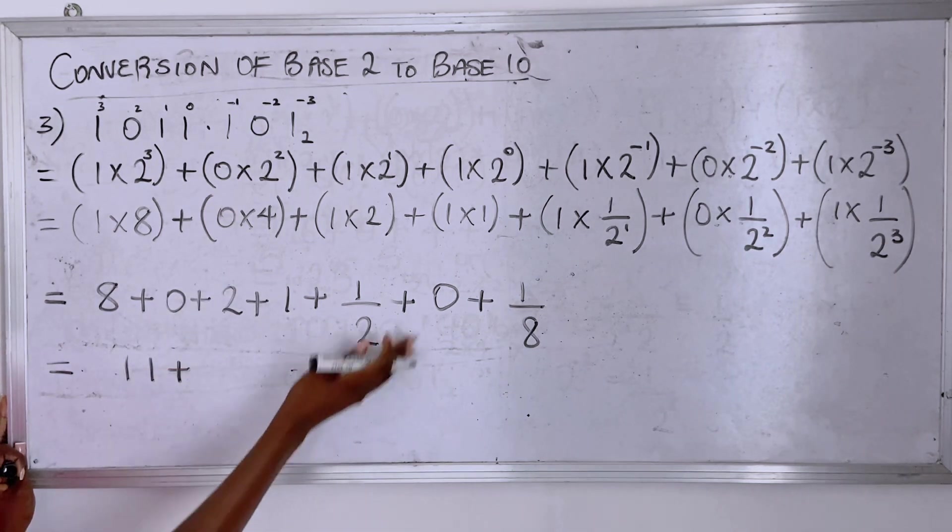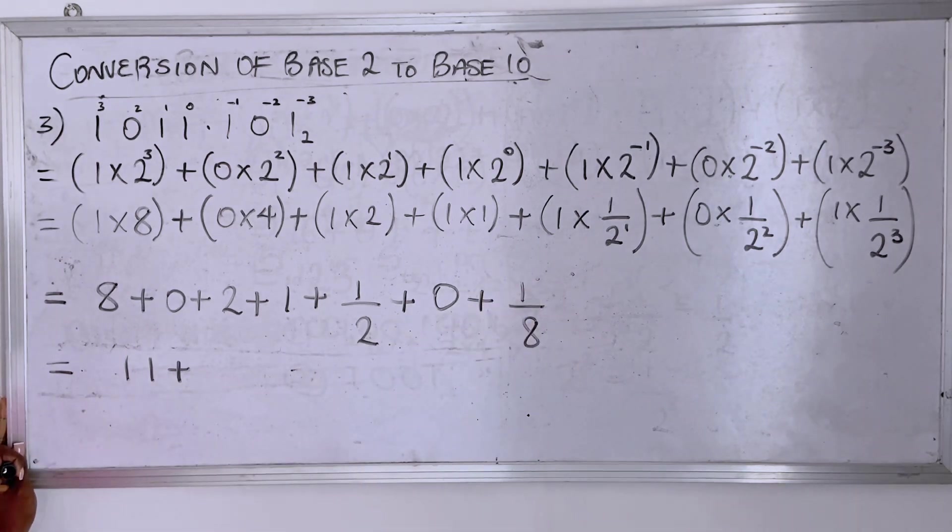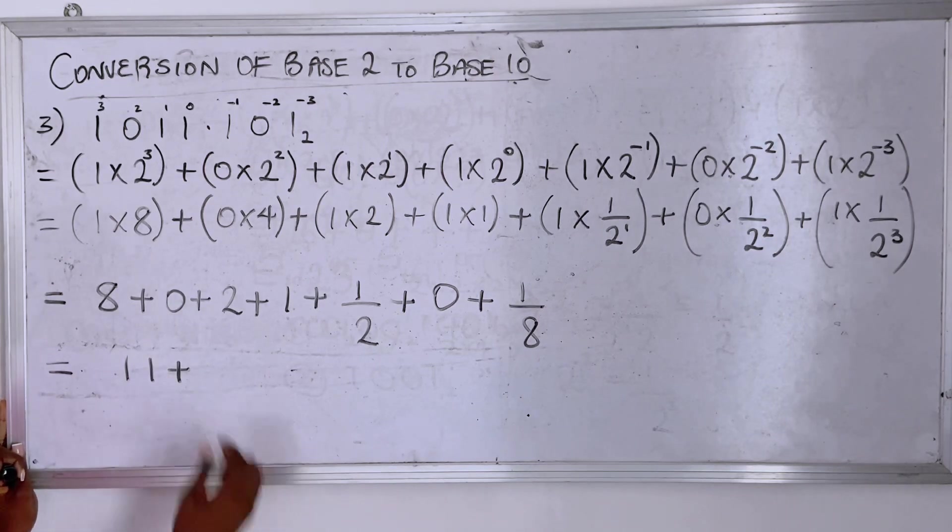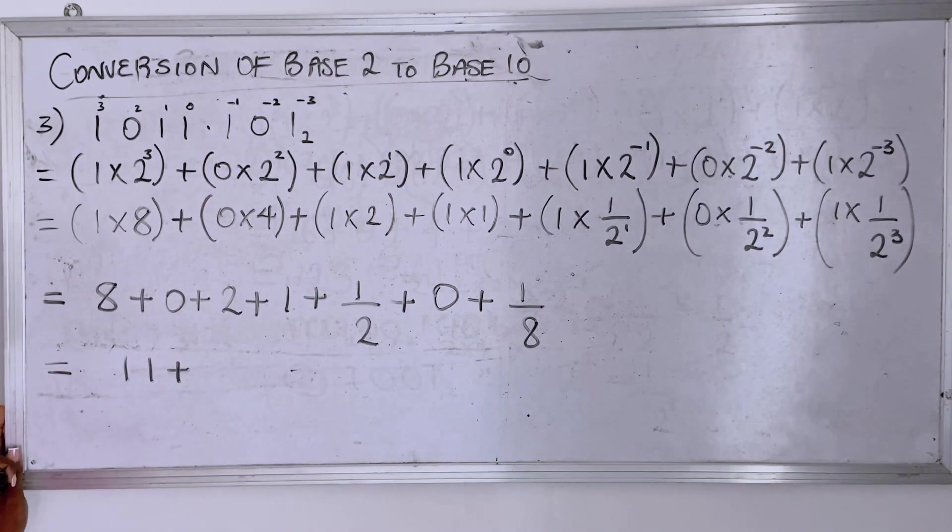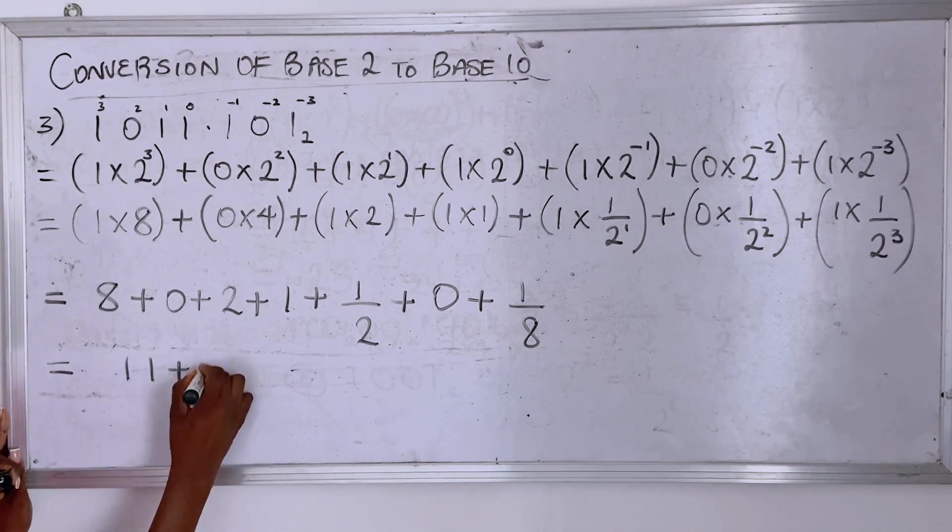You have eight plus zero which is eight, eight plus two is ten, ten plus one is eleven. Now you could change this to decimal or still sum it up as a fraction. We'll do both. This in decimal, one divided by two is zero point five.